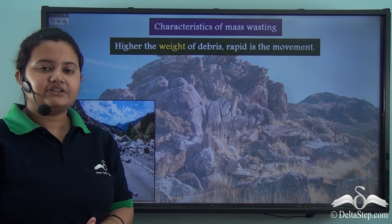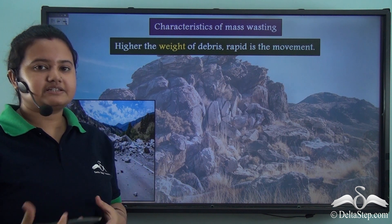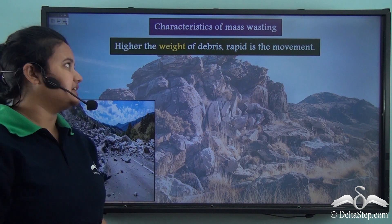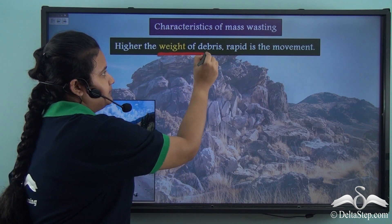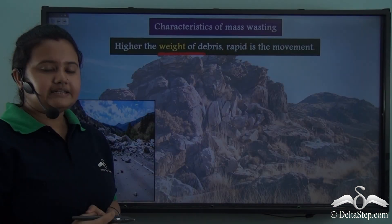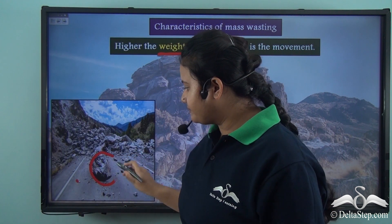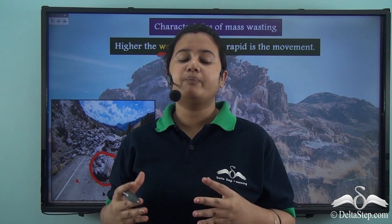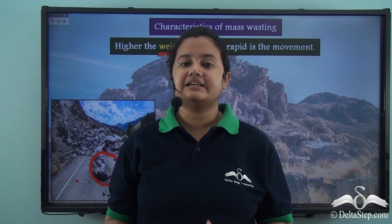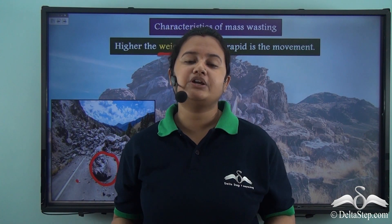Apart from gravity there are other factors that influence mass wasting. The first factor is the weight of debris. Higher the weight of debris, the more rapid is the mass movement. Heavier materials like large gravels or pebbles move down the slope of a hill more rapidly than lighter materials like sand, silt or clay. So the weight of debris has a strong influence on the speed of mass wasting.